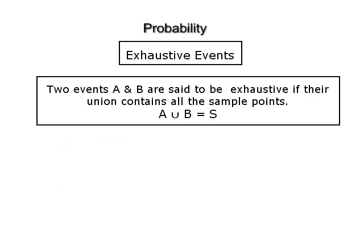Exhaustive events. Two events A and B of the sample space S are said to be exhaustive if A ∪ B equals the sample space, that is A ∪ B contains all the sample points. For the experiment above, A and B are such that A ∪ B = S. Therefore, events A and B are not only mutually exclusive but they are exhaustive also.